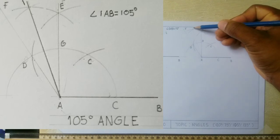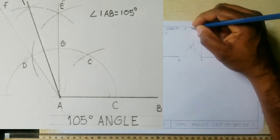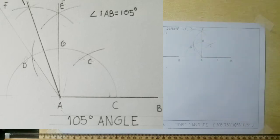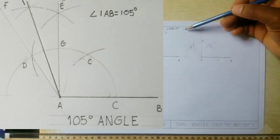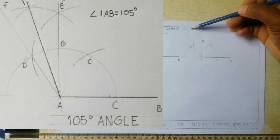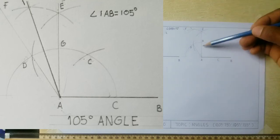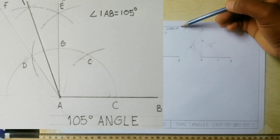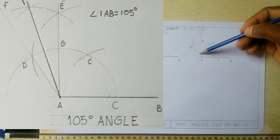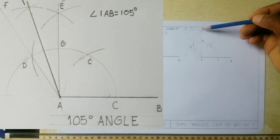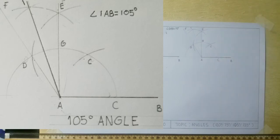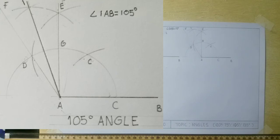We can call this point I. Now angle FAI is 15 degrees. Angle FAE is a 30 degree angle. And angle IAE is a 15 degree angle. So now what we notice is that there is a trend: by learning the basic angles and also how to bisect the basic angles, we can get many different angles from this procedure.